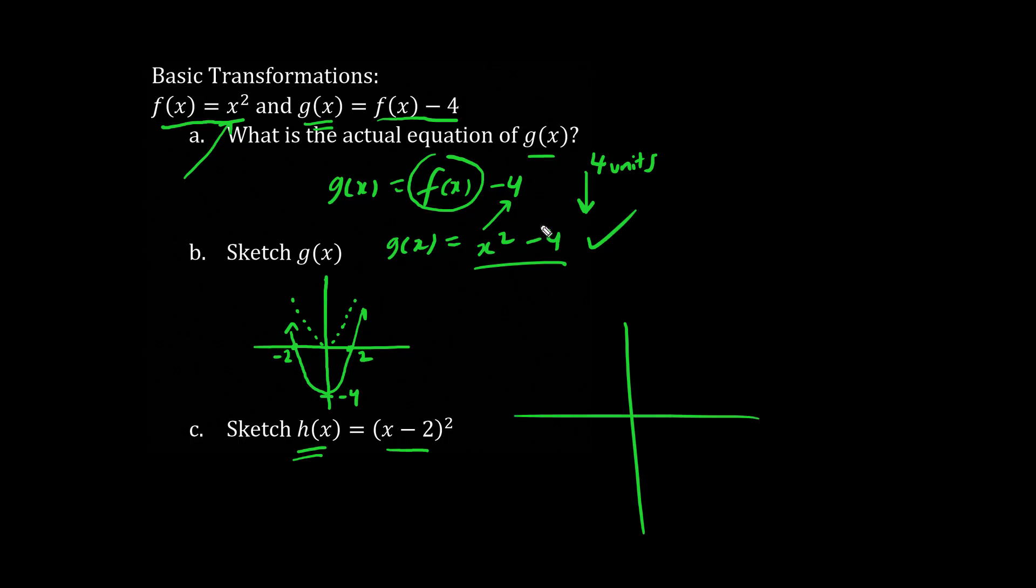So the number is outside, it behaves normally. Minus 4 means down 4, plus 4 means up 4, but when it's within, we think left or right. In this case, minus 2 refers to 2 to the right.